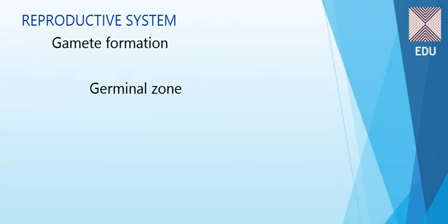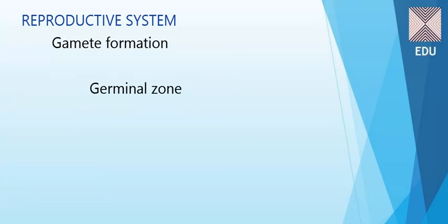The germinal zone lies at the proximal blind end of the gonad. Usually it is a single large terminal cell constituting this zone. The apical cell, which is the epithelial cell of the gonad, lies in front of the terminal cell from which the gametogonia arise by budding. So this germinal zone at the proximal part of the gonad gives rise to gametogonia.